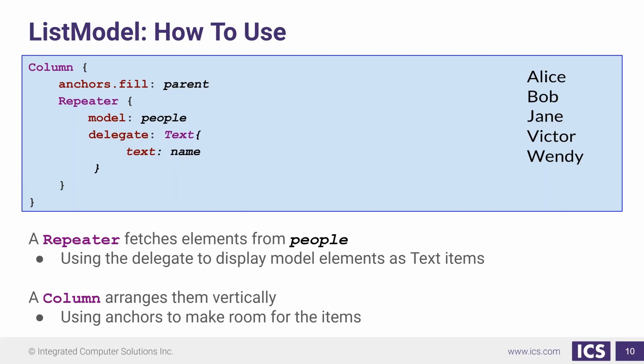Here we're going to make use of the repeater. The repeater has two important properties: it has a model and it has a delegate. The model is going to hold the model that the repeater is going to load in full and fetch the elements from. The repeater then uses the object in the delegate property to describe how the data will be shown on the screen. So in our simple example, we've assigned the people list model for the model value, and our delegate is a text item with its text property set to name, which is one of the data roles from our model.